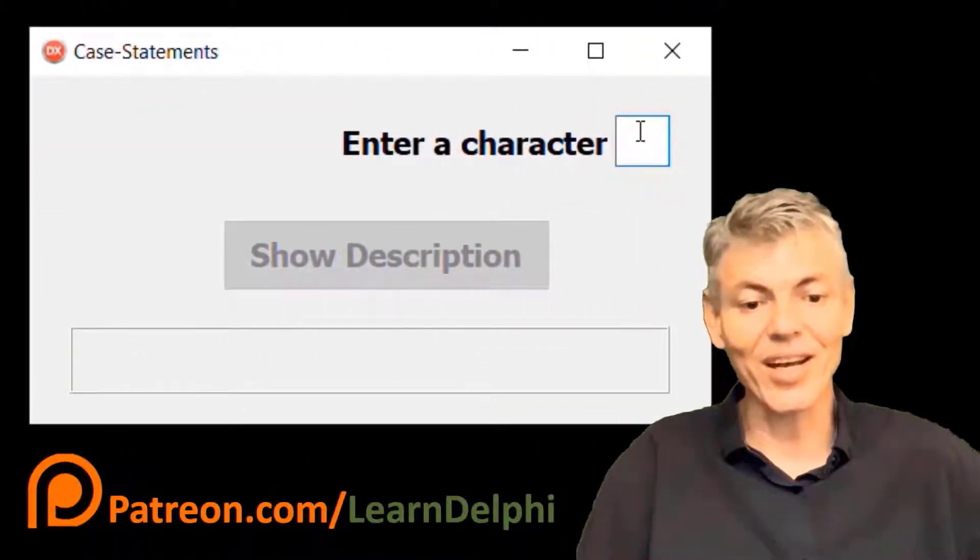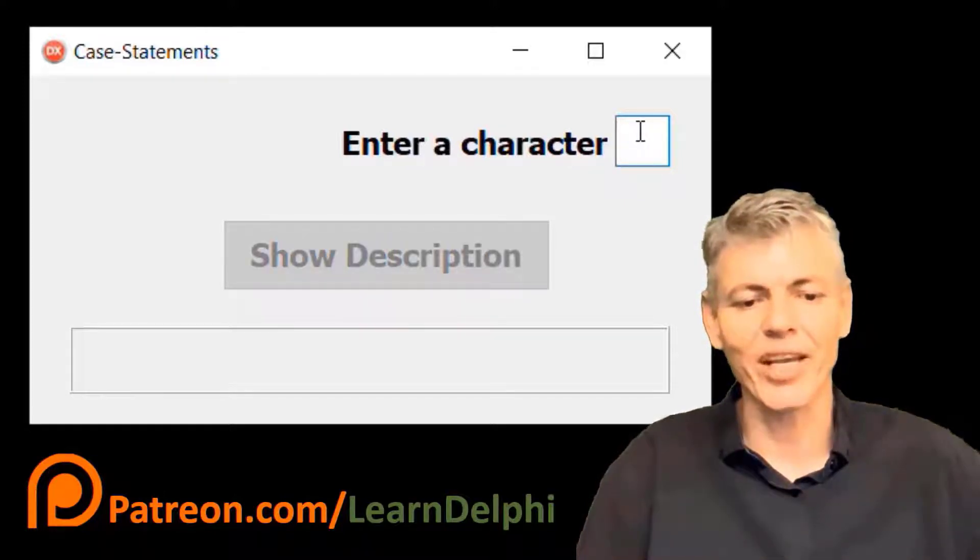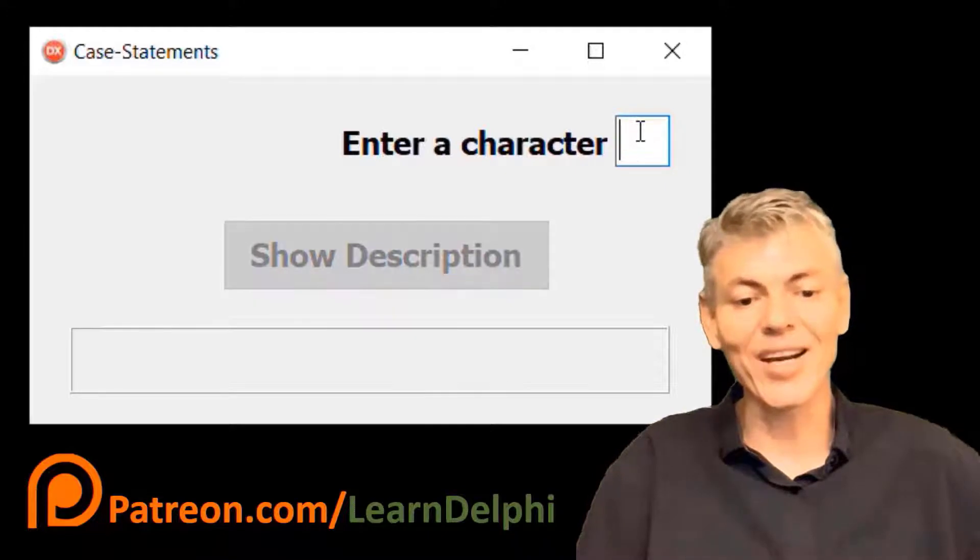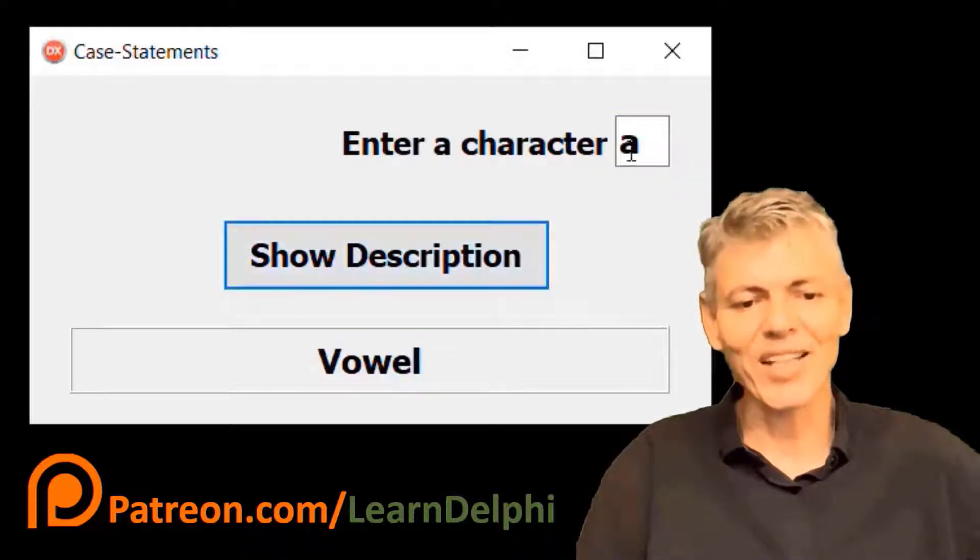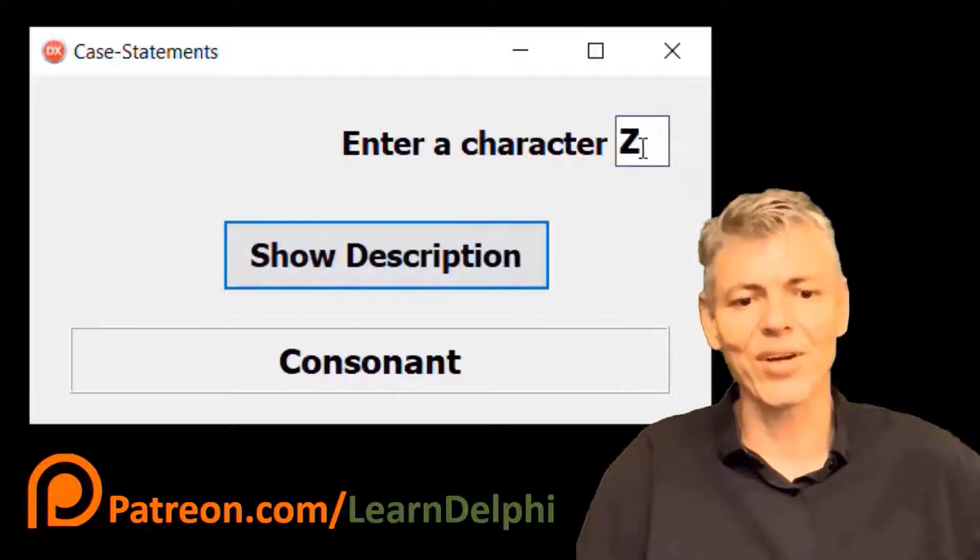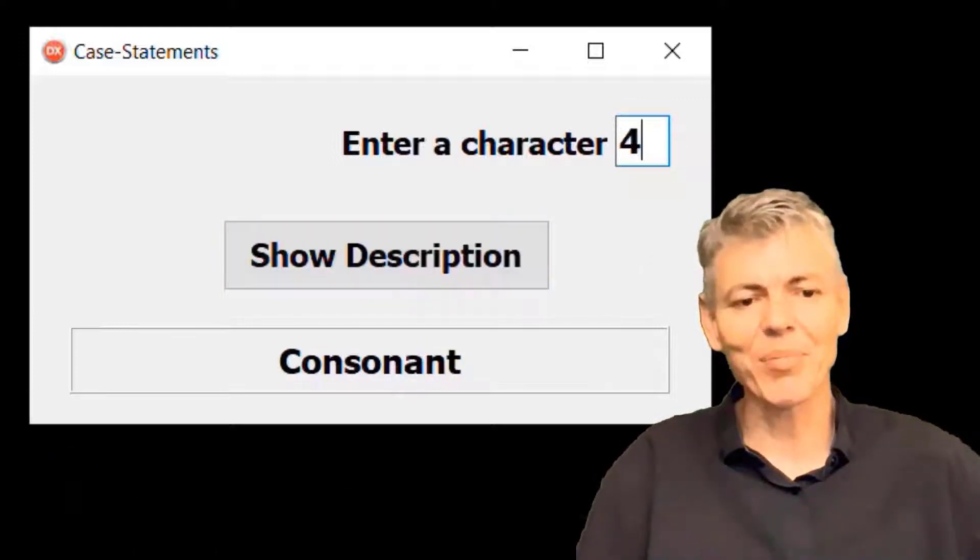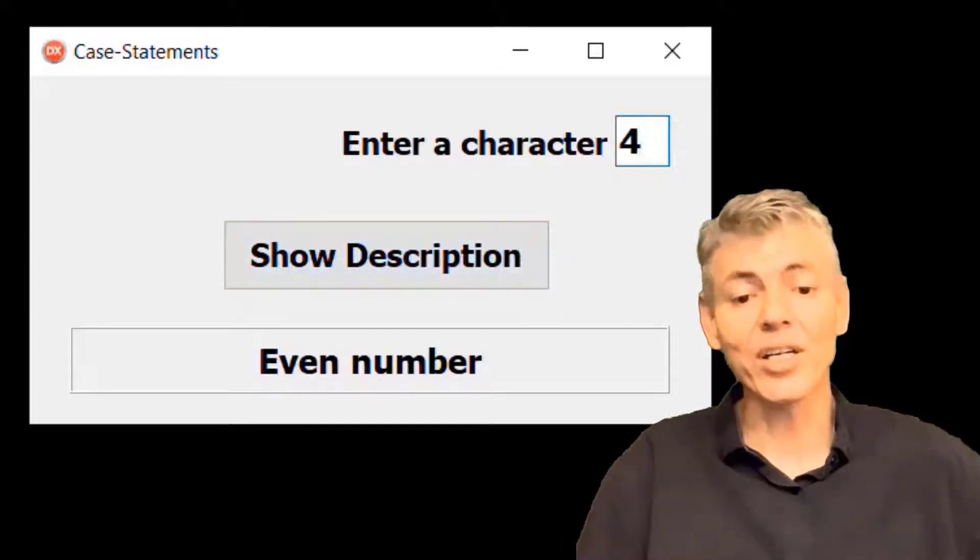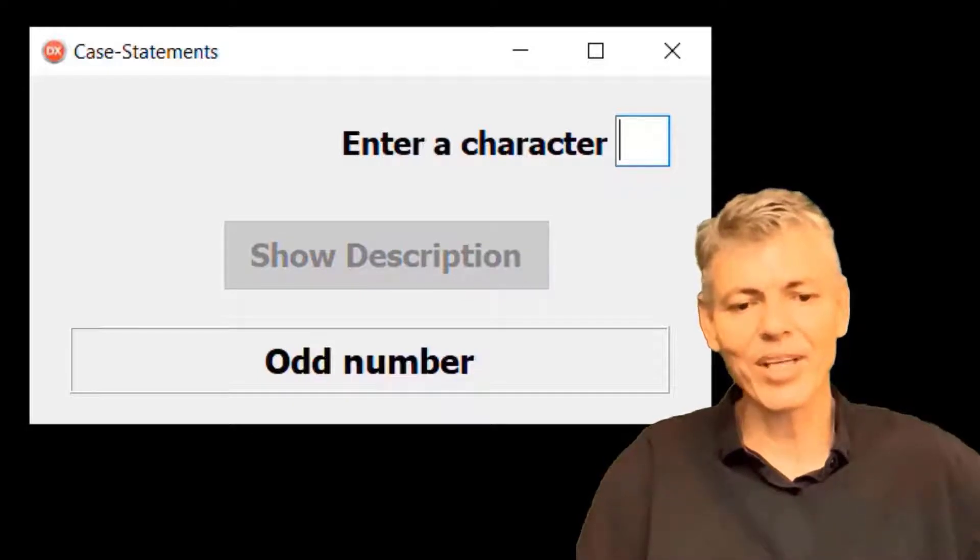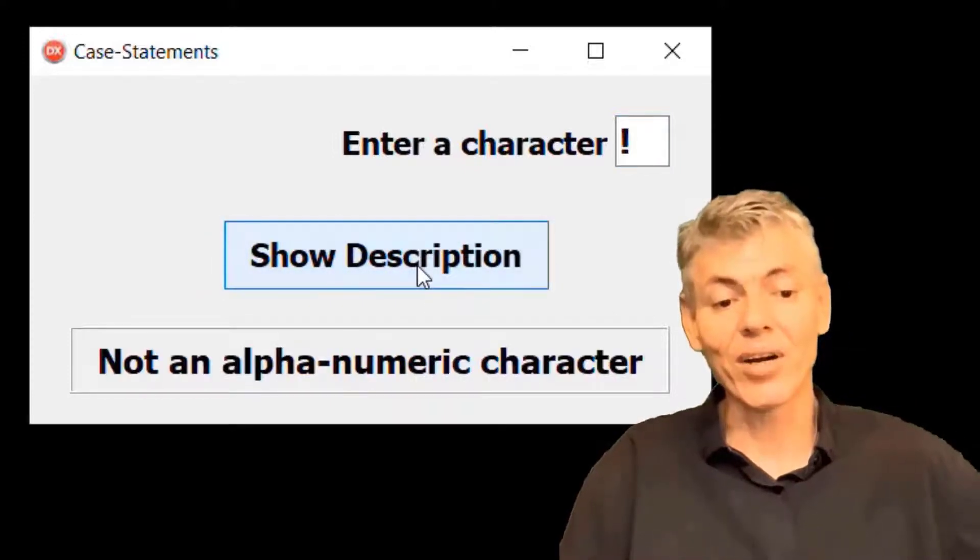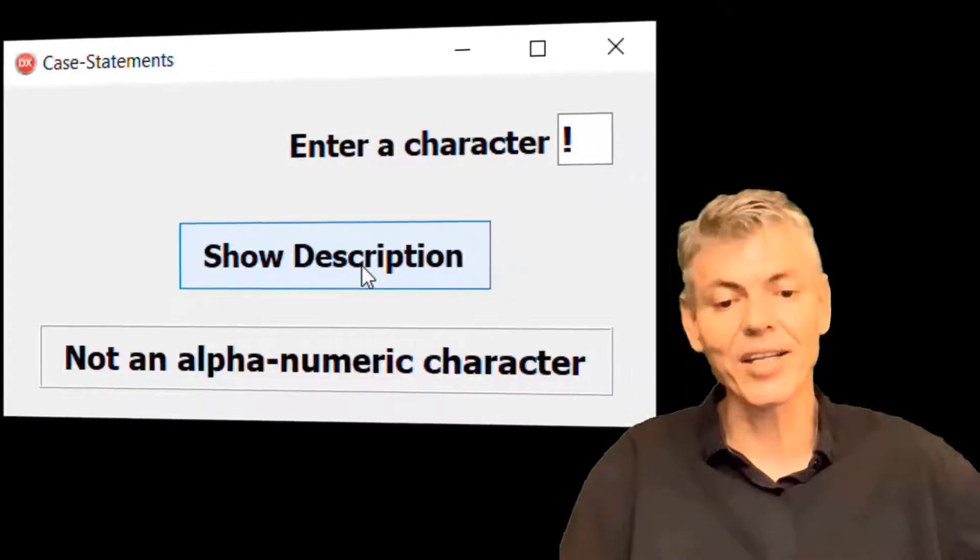Last time we wrote code that enables and disables this button when you enter or remove a character from the edit. We also wrote code that described the letters in the alphabet. Our code handles uppercase and lowercase letters. If you type a vowel, the panel displays vowel. If you type a letter that is not a vowel, like Z, the panel displays consonant. And if you type a number, an if statement must check if it is odd or even and show odd number or even number in the panel. Also notice how the button is disabled when the edit is blank and enabled when it is not blank. If you type a special character like an exclamation, the panel must display not an alphanumeric character. If you downloaded the starter files, open it in your IDE and let's start today's lesson.